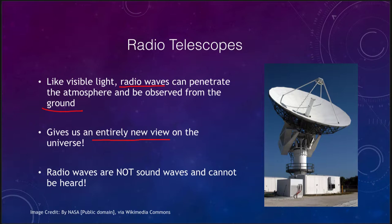These are very long wavelengths compared to optical light and very low energy photons, giving us a very different view of the universe. There are objects that are visible in radio telescopes that are completely invisible to optical telescopes, and of course there are objects visible in optical telescopes that cannot be seen by radio telescopes. So it gives us a completely new view of the universe.